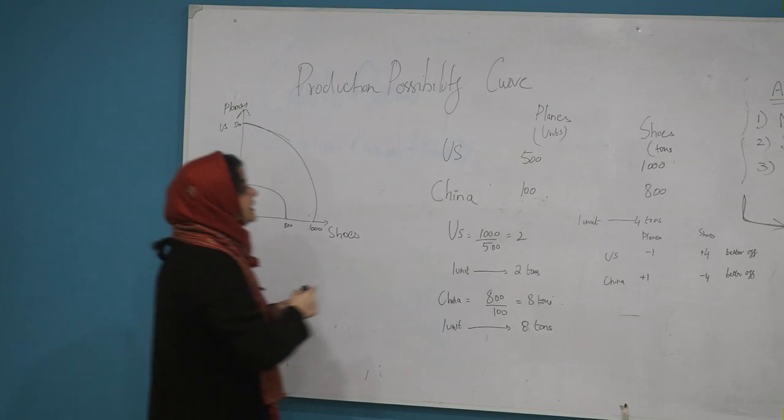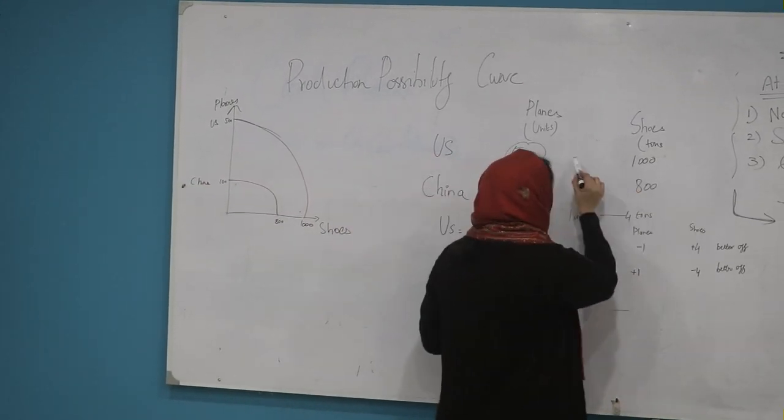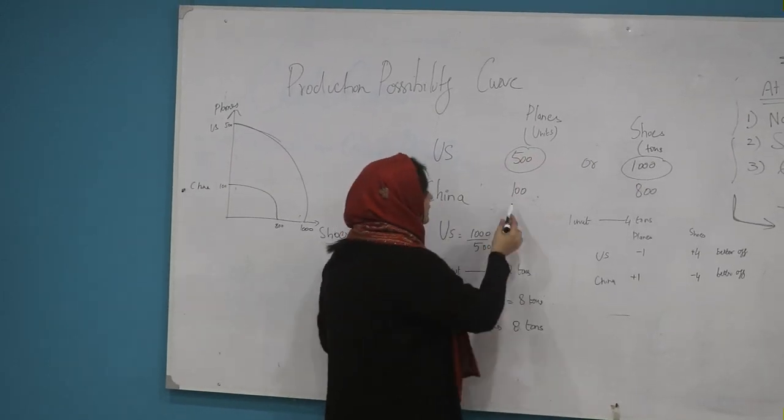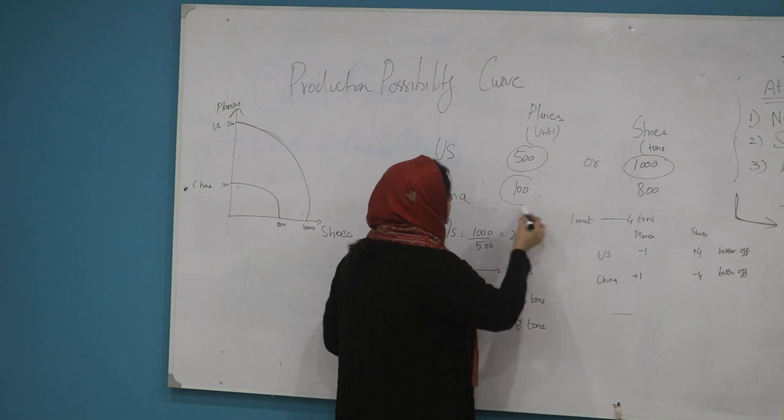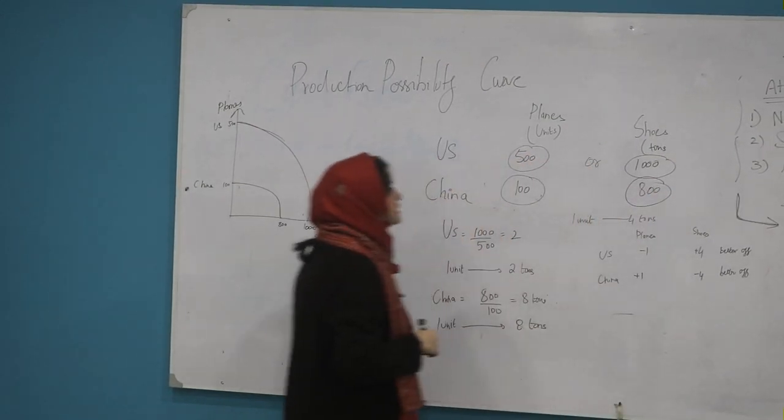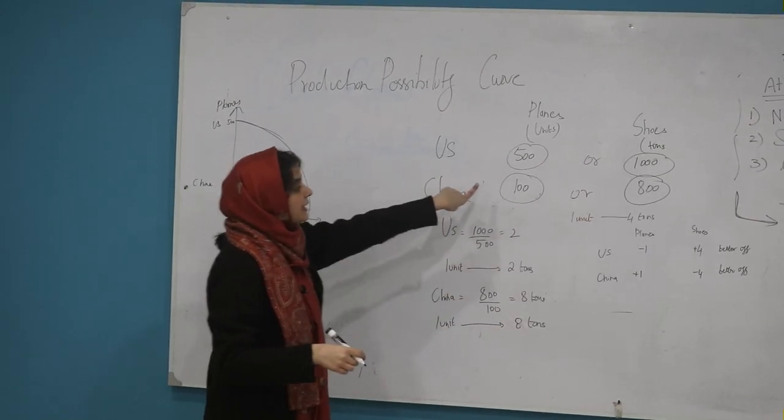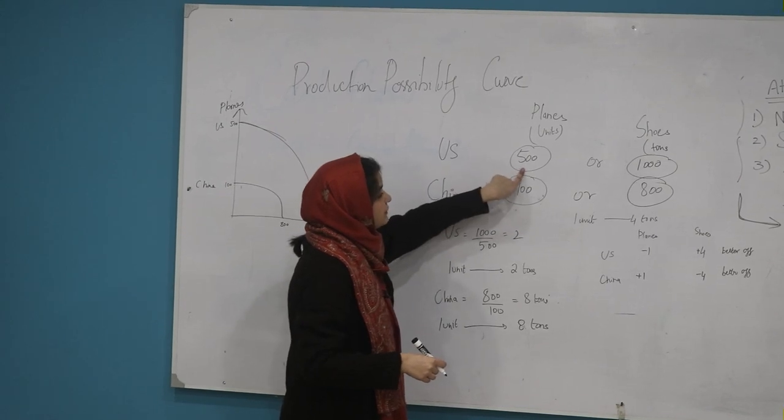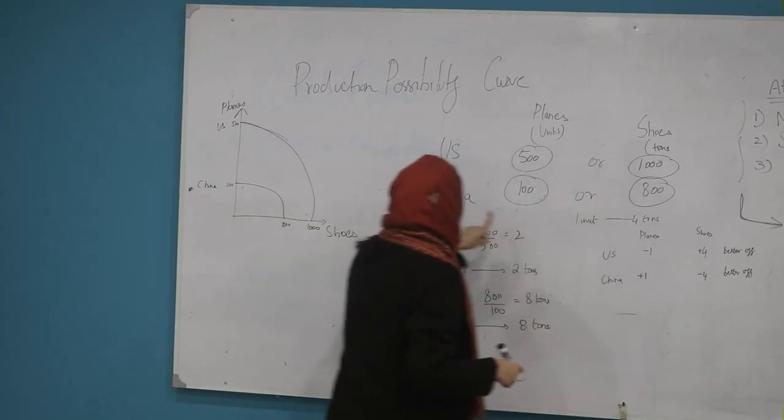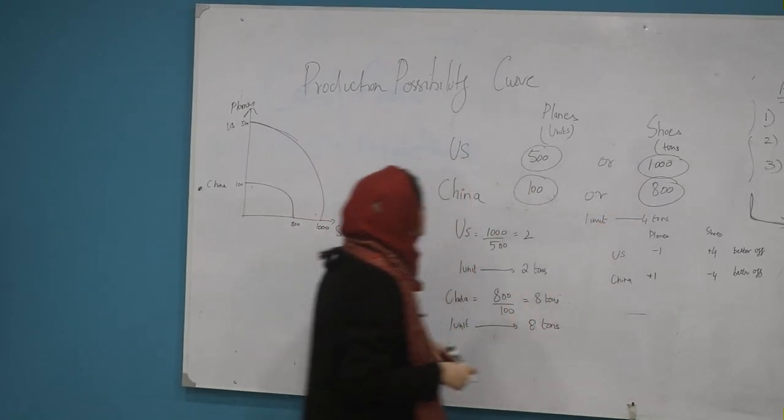We make planes on this axis and shoes on this axis. United States can either make 500 units of planes or 1000 tons of shoes. China on the other hand can either make 100 units of planes or 800 tons of shoes.